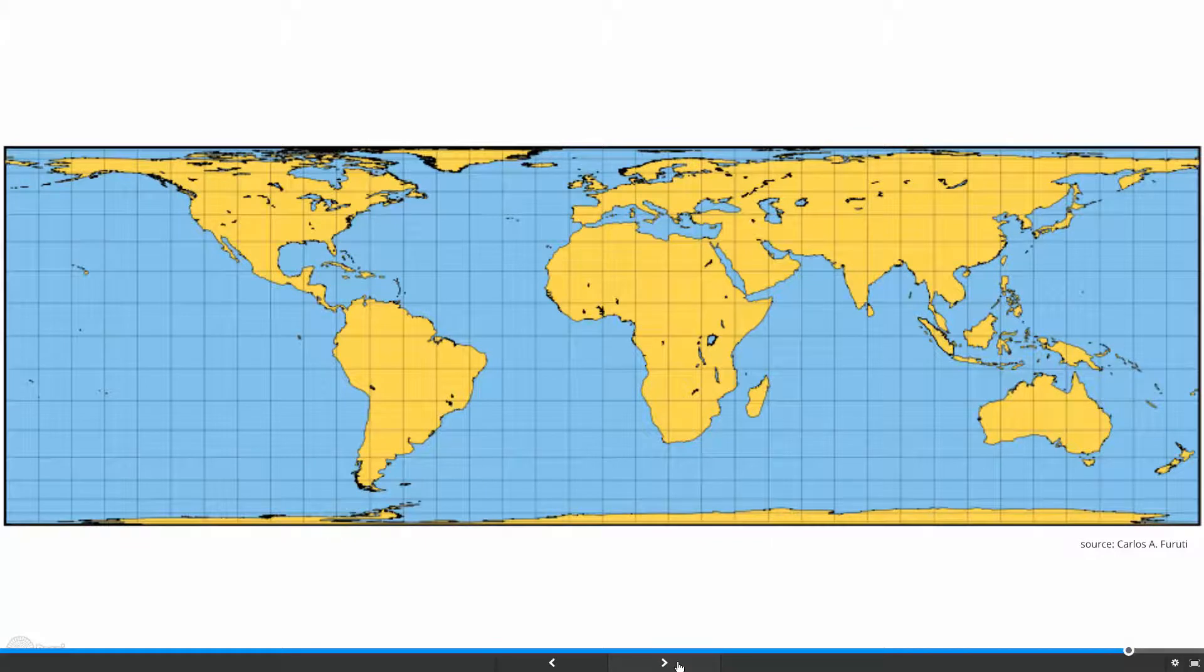In the map, we can see that Greenland is much smaller than Africa. However, the map is rather compressed, and the shape is distorted in the polar regions as well.